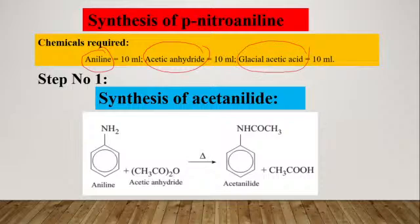We will synthesize para-nitroaniline in three steps. In the first step, aniline is treated with acetic anhydride and heat. It will be converted into acetanilide, and acetic acid will be formed. This is the chemical reaction of the first step.